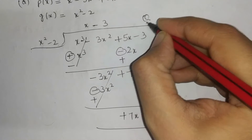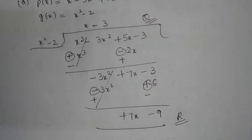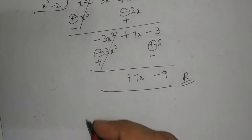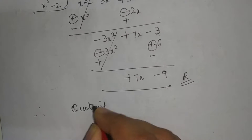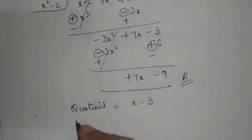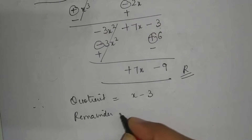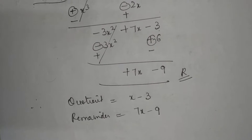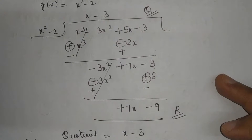So this is what we have for our quotient, and this is our remainder — which is what the question asked. Therefore, quotient is equal to x minus 3, and remainder is equal to 7x minus 9. I hope this first part is clear to you.